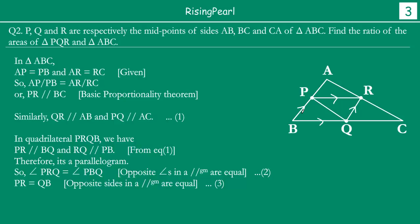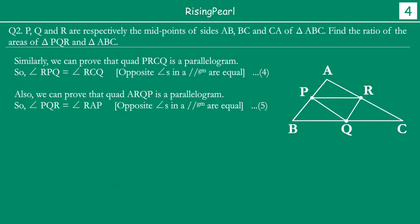In a parallelogram, opposite angles are equal and opposite sides are equal and parallel. So we find that certain angles and sides in our figure are equal. Similarly, looking at quadrilateral PRCQ, PR is parallel to one side and CR is parallel to PQ, so quadrilateral PRCQ is also a parallelogram.